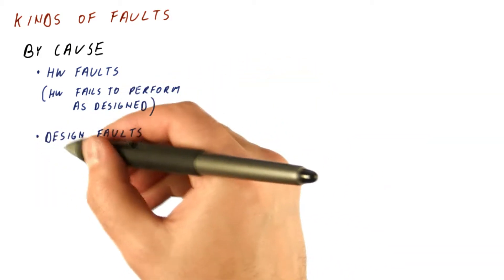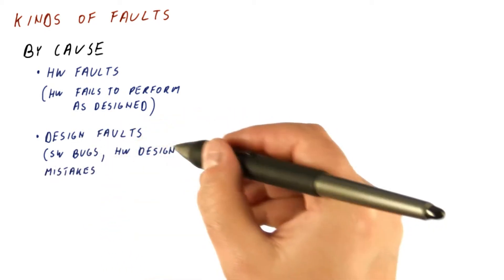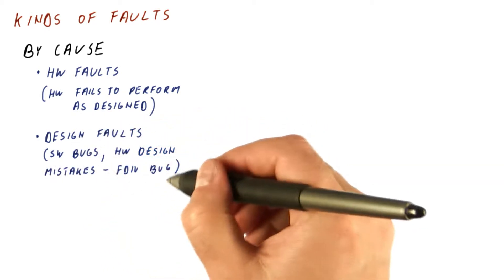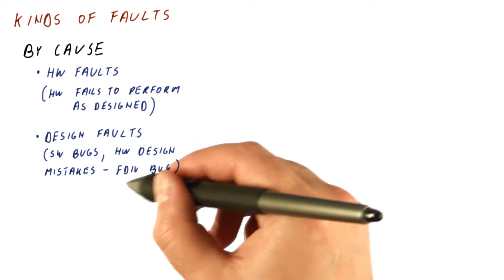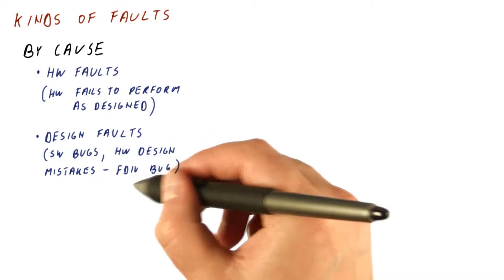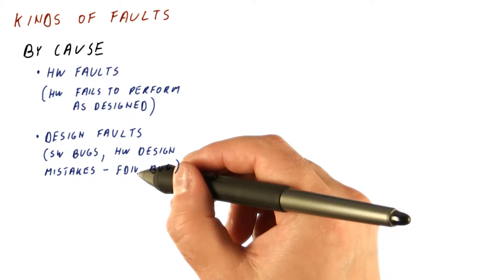We can have design faults. For example, software bugs are design faults, and also some of the hardware design mistakes, such as the famous Pentium FDIV bug, where this FDIV instruction was not implemented correctly. So if you gave it some combinations of numbers, you would get incorrect results, and it was designed that way.